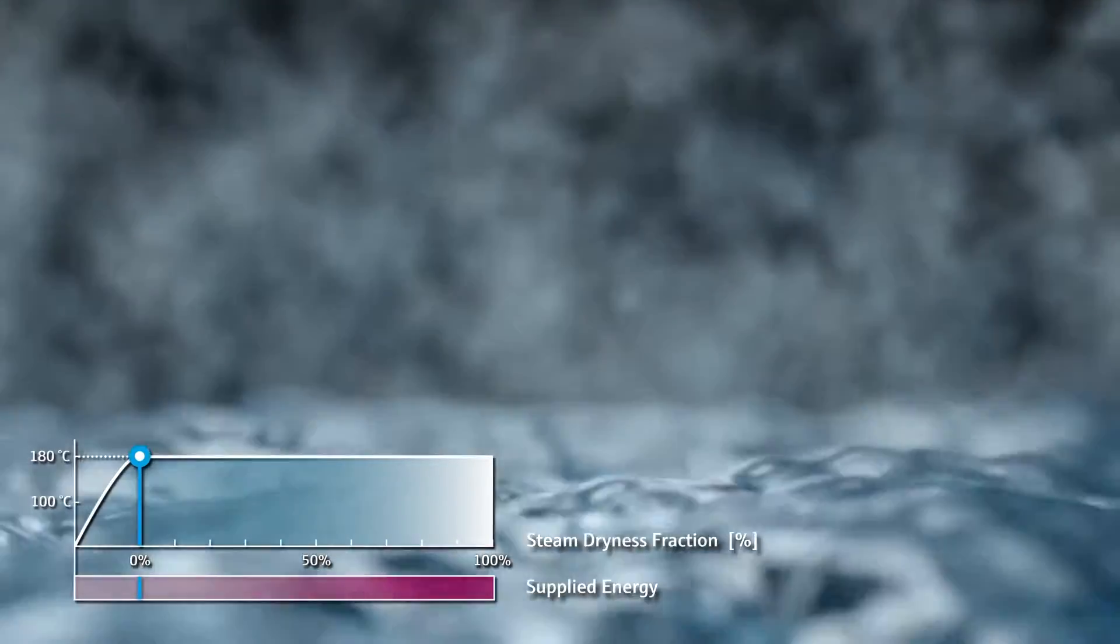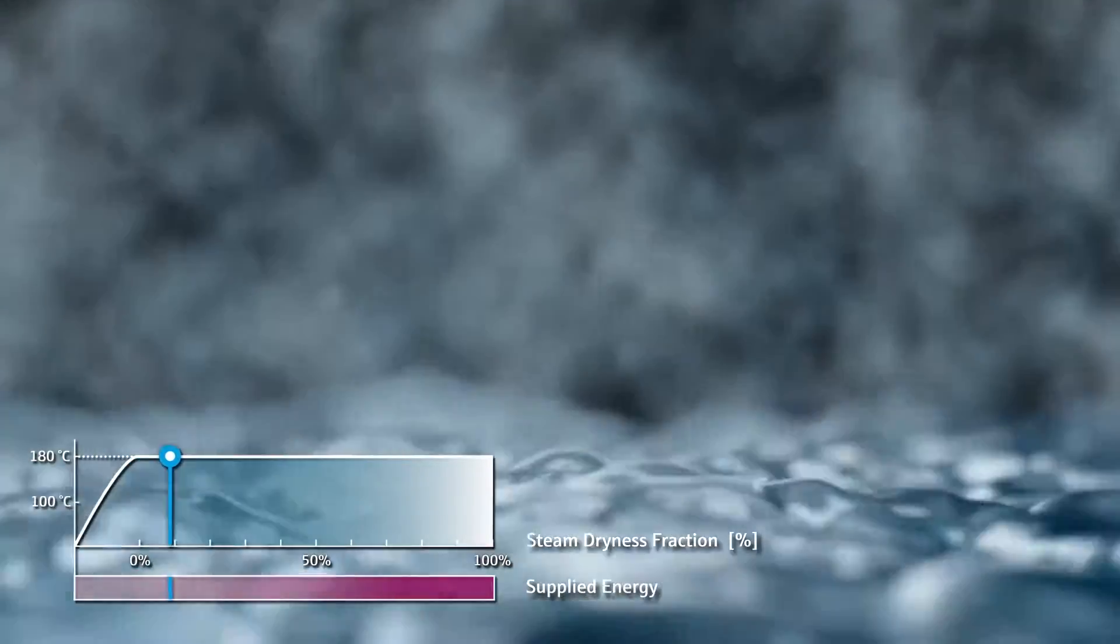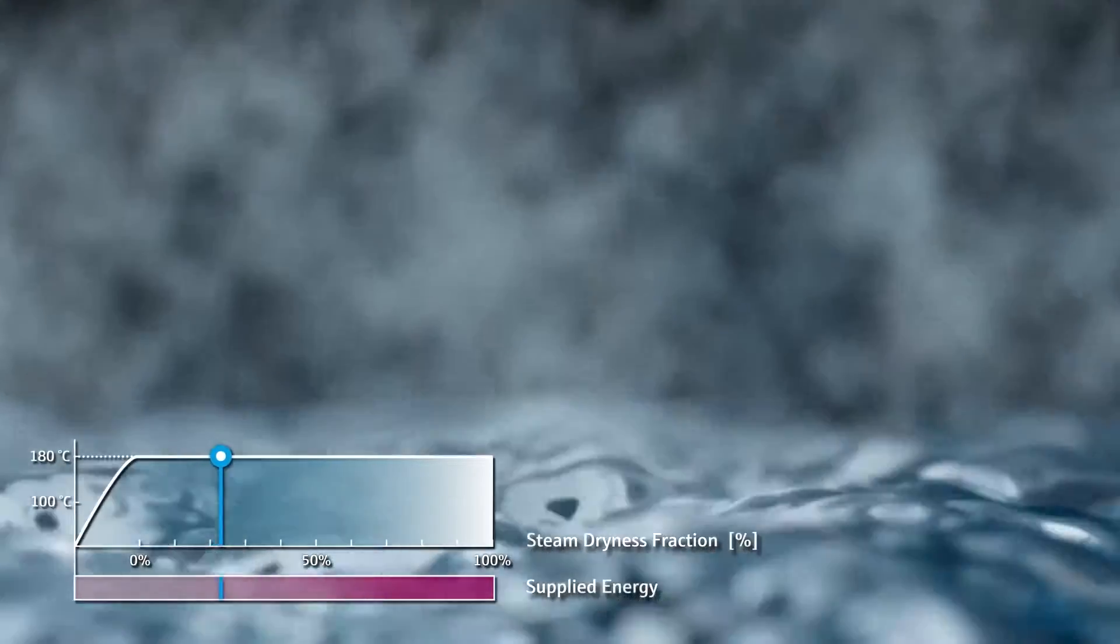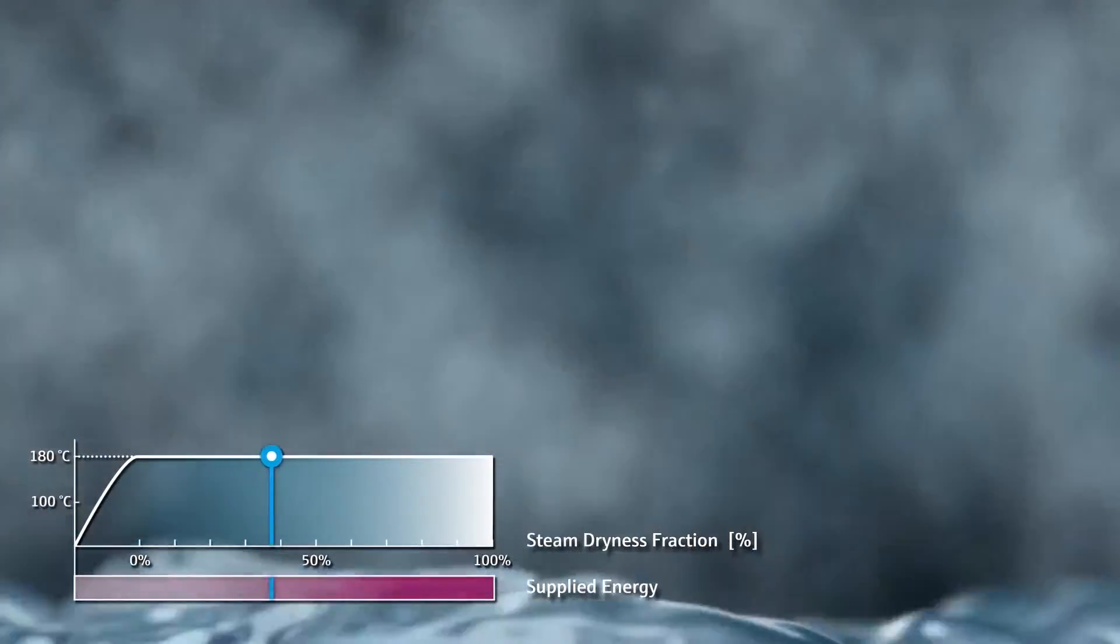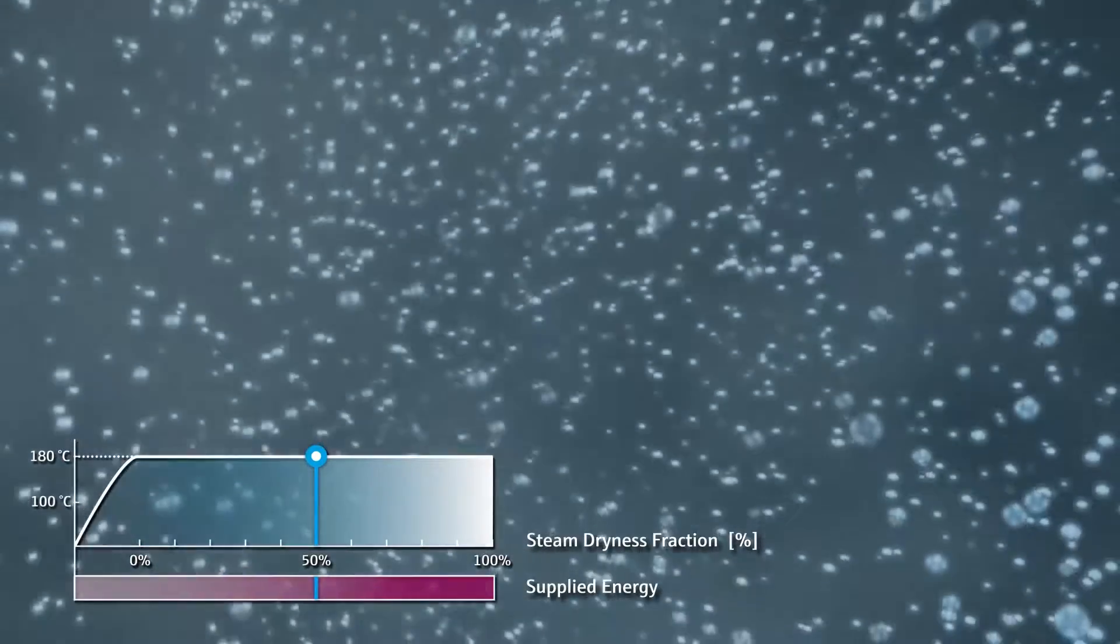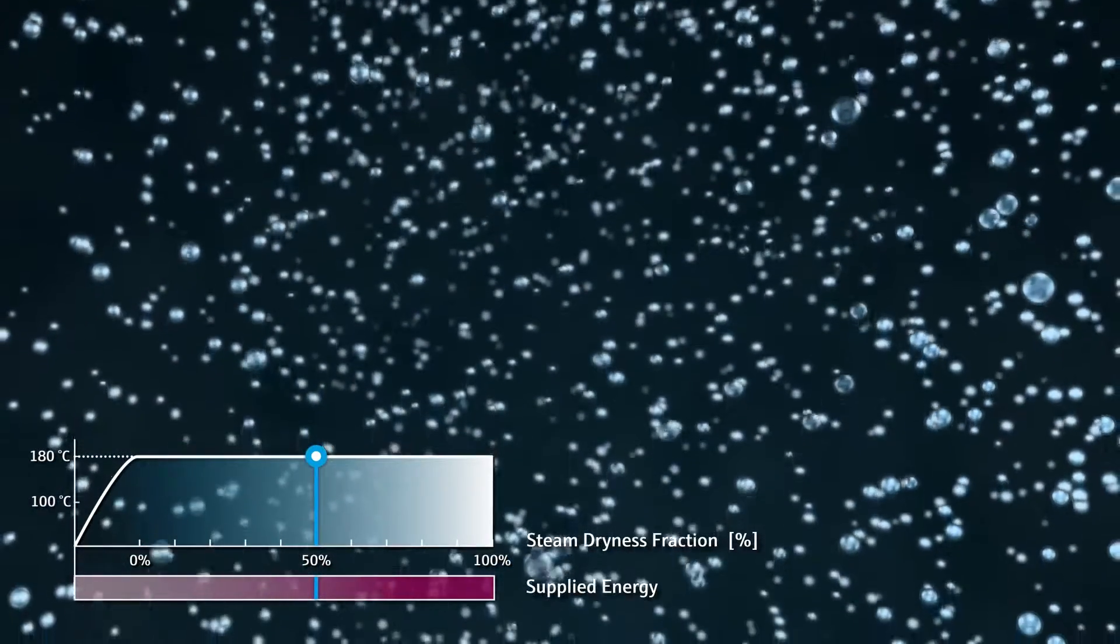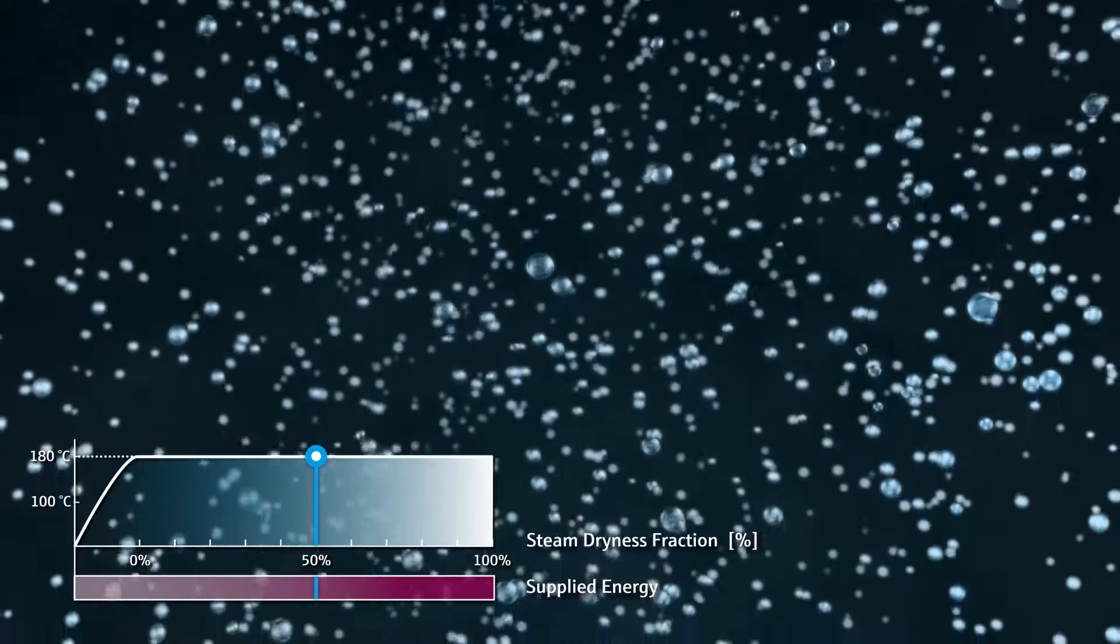If the boiling water is heated further, small but visible water droplets begin to form just above the surface, making up what is known as wet steam. When the heat continues to increase, these water droplets become smaller and smaller.